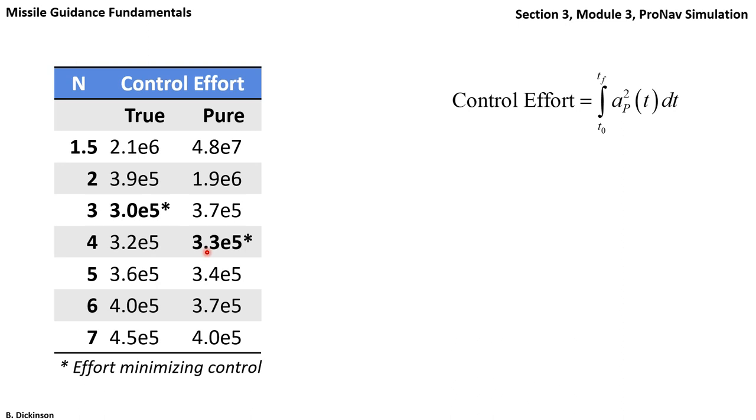So what value of N is best? For small values of N, we saw AP diverge late in the engagement.